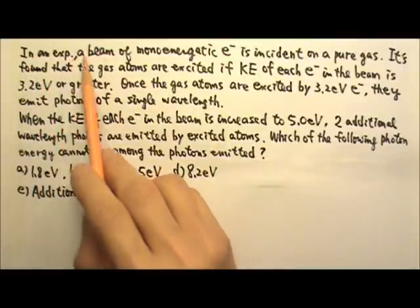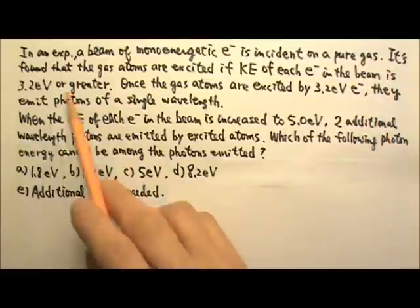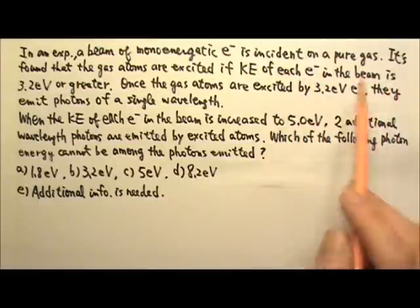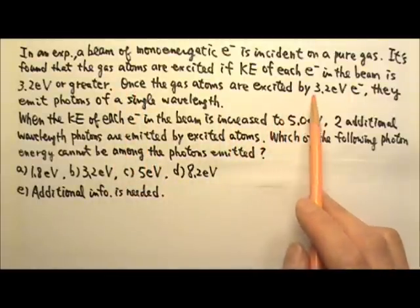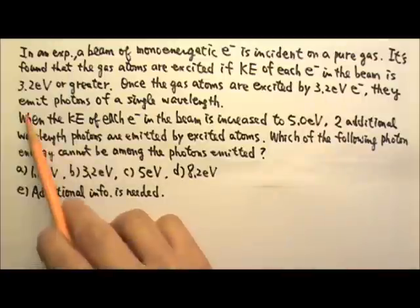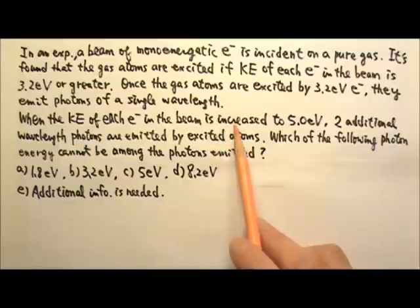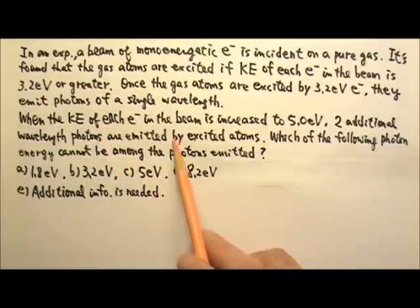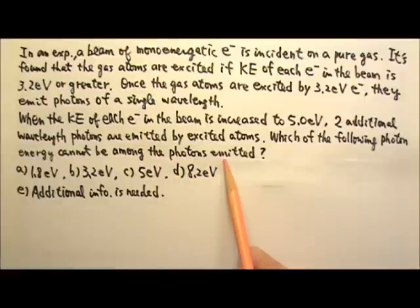In an experiment, a beam of mono-energetic electrons is incident on a pure gas. It is found that the gas atoms are excited if the kinetic energy of each electron in the beam is 3.2 eV or greater. Once the gas atoms are excited by the 3.2 eV electrons, they emit photons of a single wavelength. When the kinetic energy of each electron in the beam is increased to 5 eV, two additional wavelength photons are emitted by excited atoms. Which of the following photon energy cannot be among the photons emitted by the atoms excited by the 5 eV electrons?